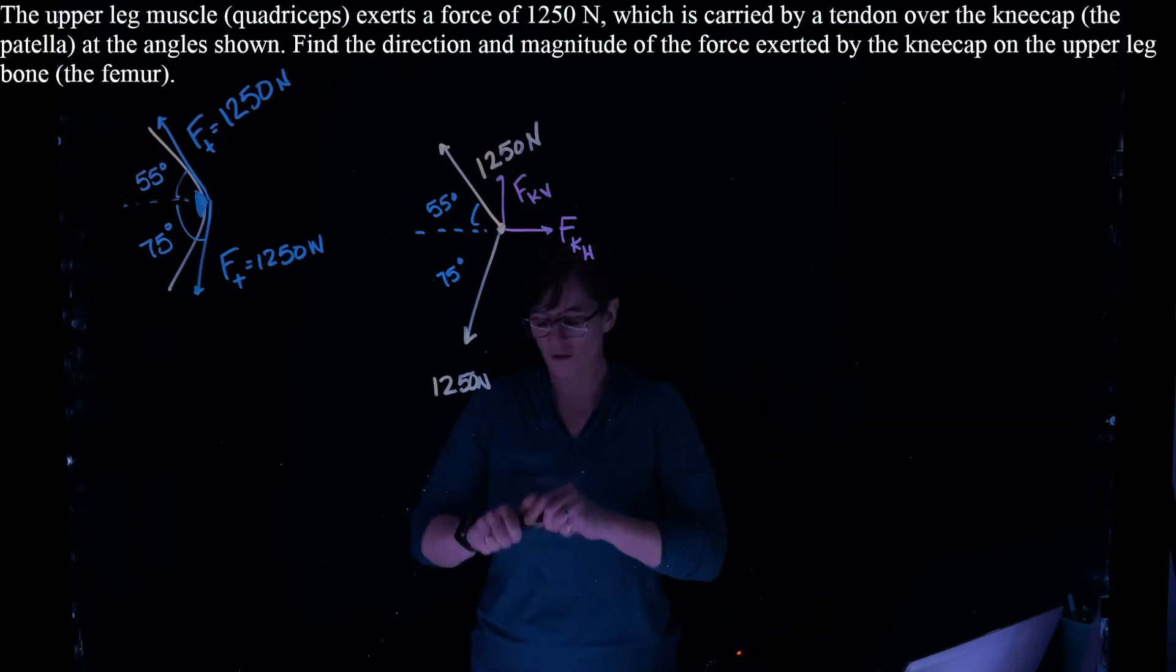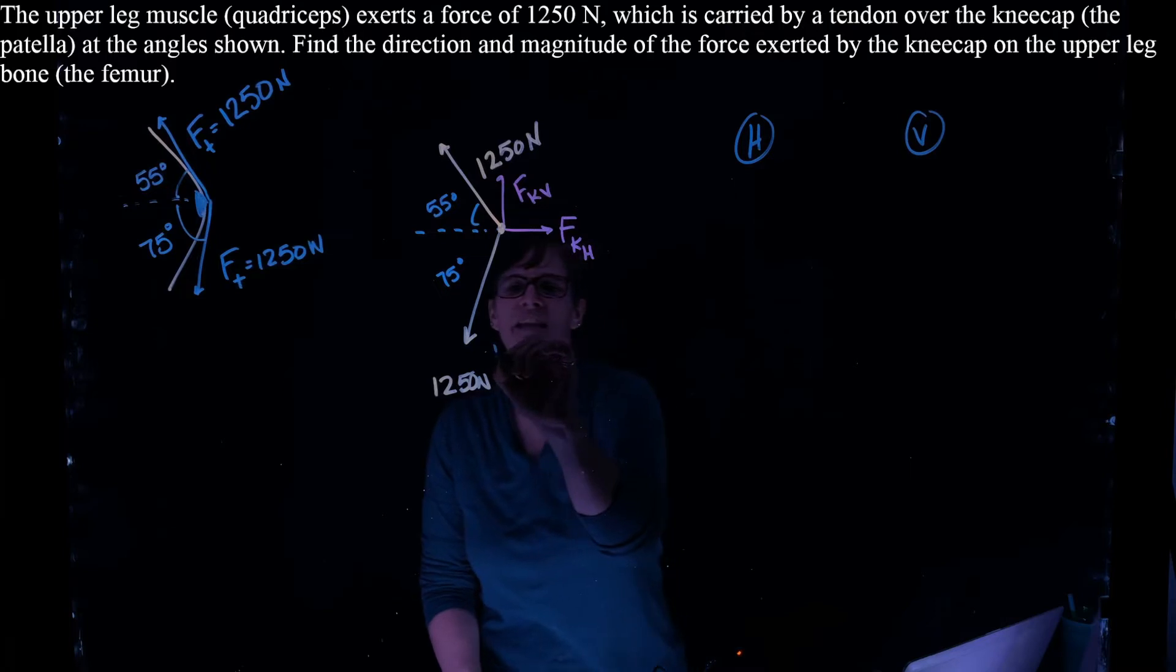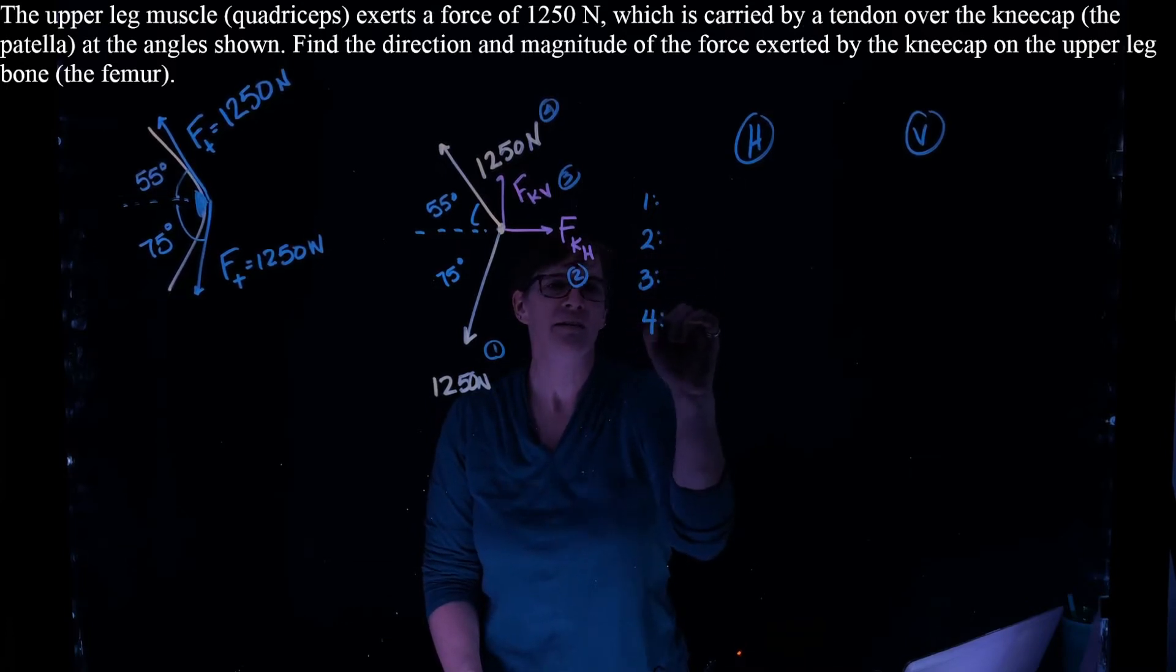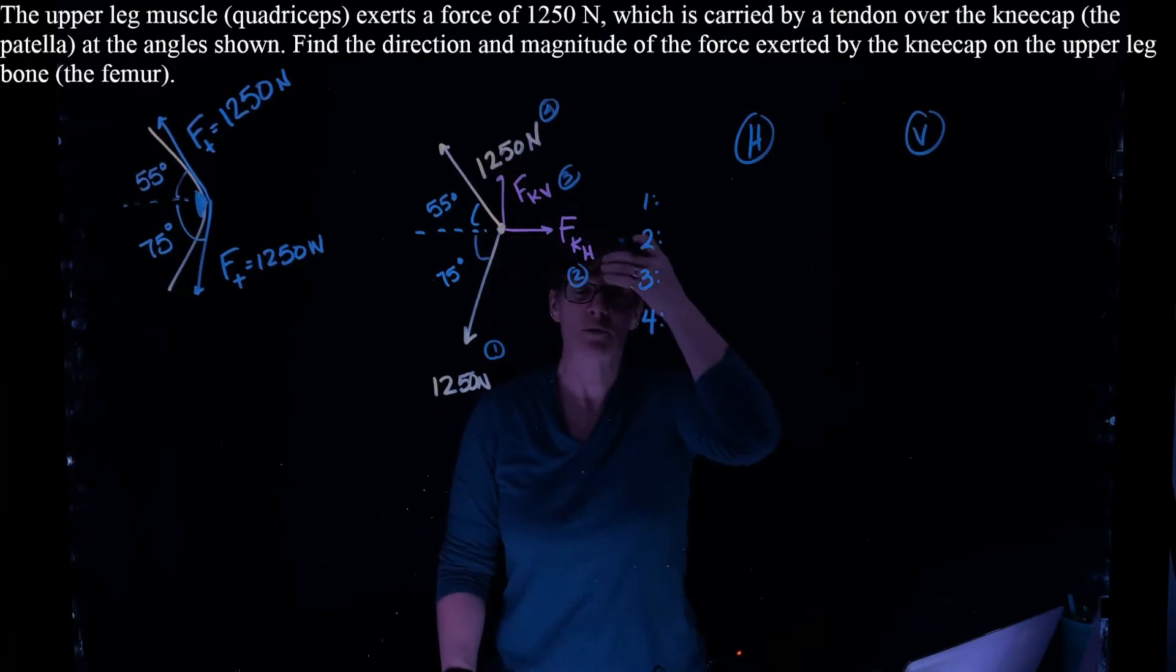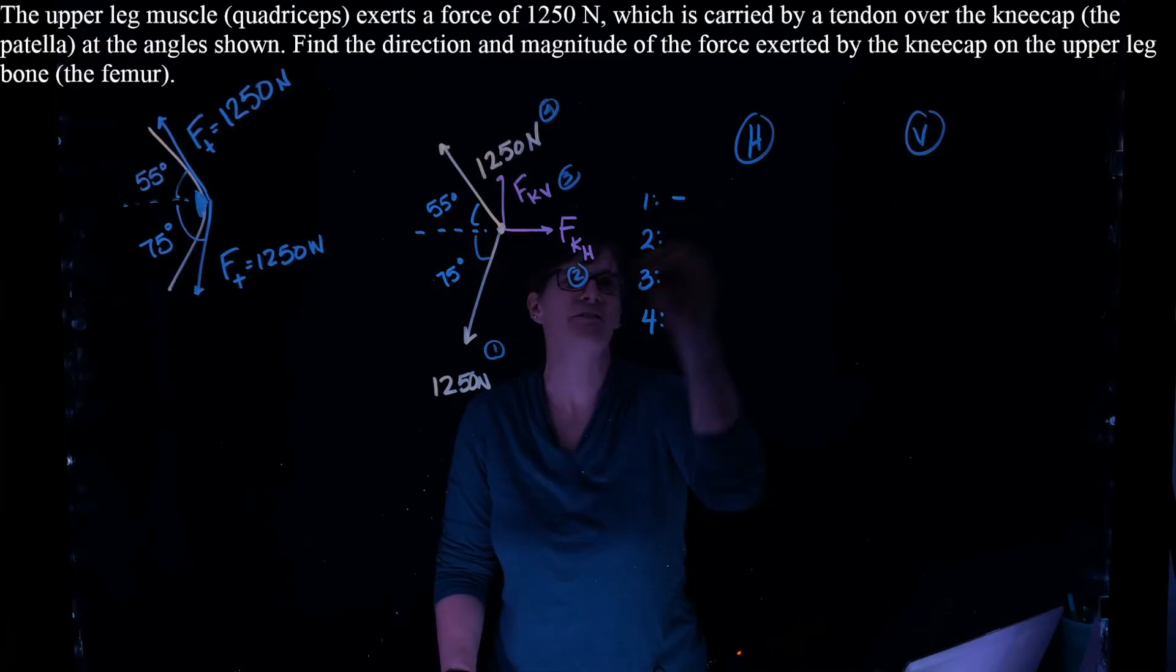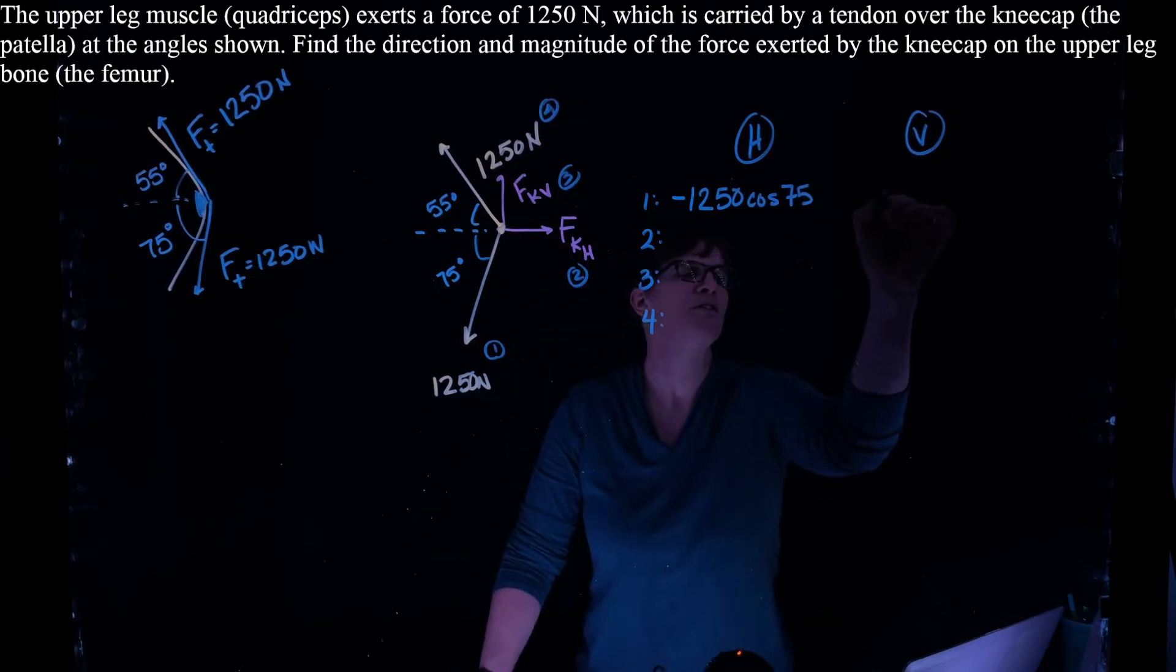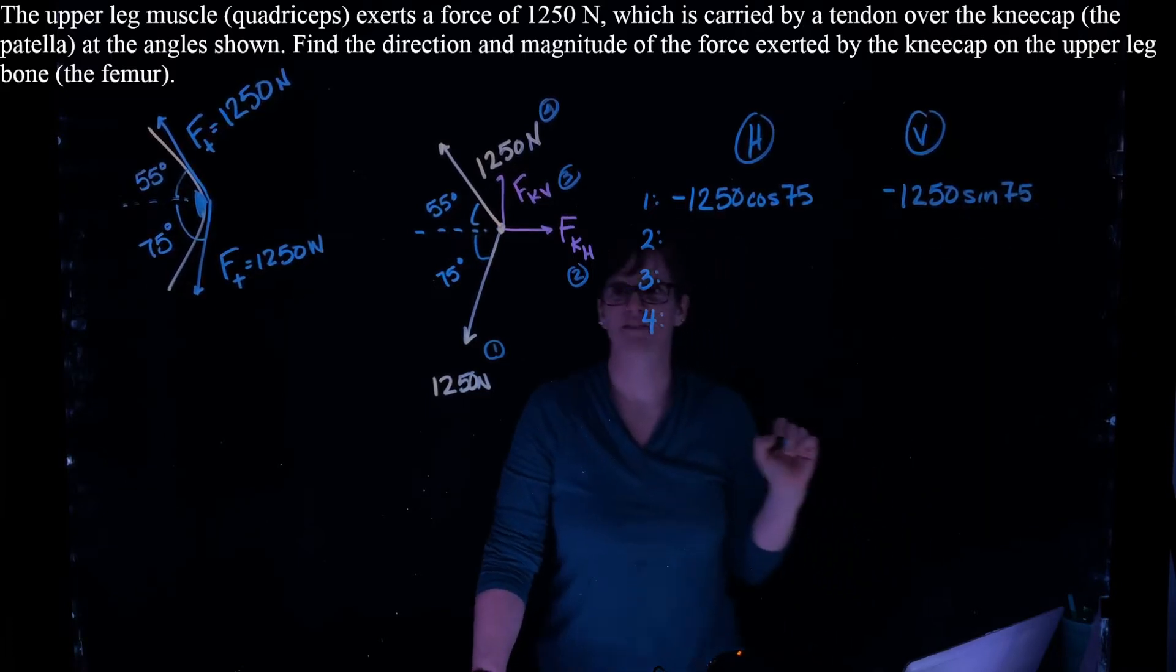All right. So we have four forces. We're going to look at the horizontal and vertical components of those forces. I will label them 1, 2, 3, and 4. All right. Force number 1. That is, this is my angle 75 degrees. I'm pointing to the left. If I use this angle 75, I need to make that force negative. So we have negative 1250 times the cosine of 75. It's also pointing down. So the vertical component is minus 1250 times the sine of 75.